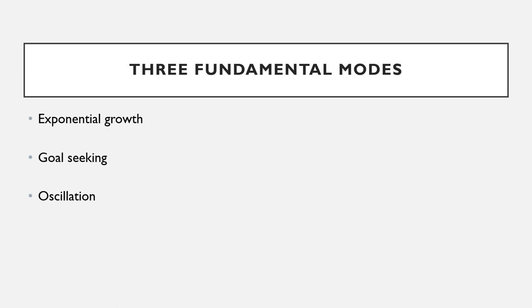Exponential growth is generated by positive feedback processes. Goal-seeking is generated by negative feedback, and oscillation is generated by negative feedback with delays.